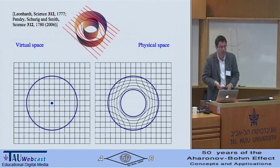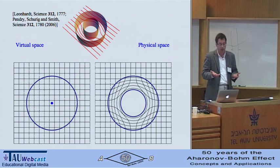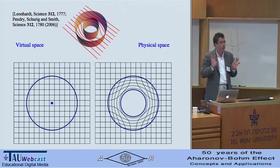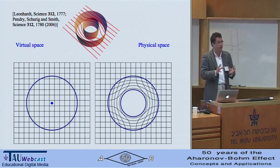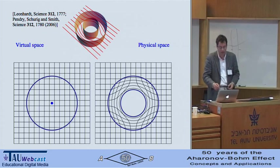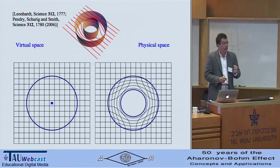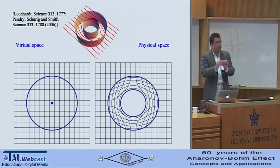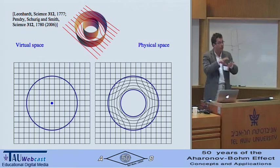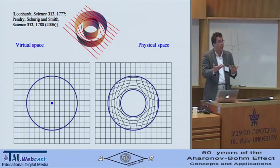And that has been applied for invisibility devices as follows. You use a coordinate transformation — a material that creates the illusion of light propagating through a virtual space, and that virtual space is empty except for one point. In reality, what happens is that this one point has been extended to cover a finite region, and in this region you can put things in, and these things are excluded from the electromagnetic field, and therefore they're made invisible.